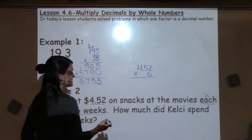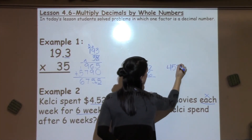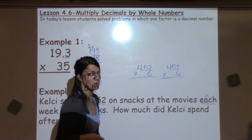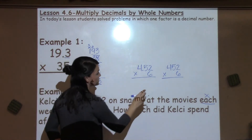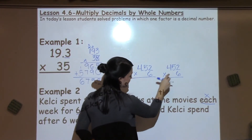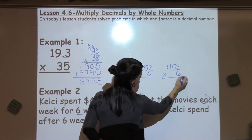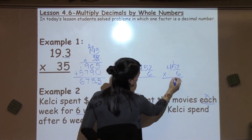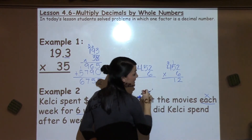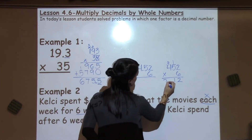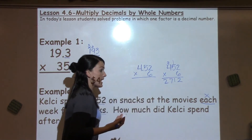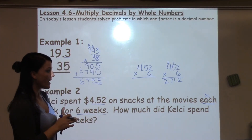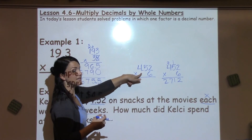If the decimal point confuses your student, you could have them pretend like it's not there until the very end. So I'm just going to multiply everything by 6. 6 times 2 is 12. 6 times 5 is 30, plus 1 is 31. 6 times 4 is 24, plus 3 is 27. Now I have the answer, and it looks like 2,712. But I know that because I'm working with a decimal, I need to put a decimal in my answer as well.